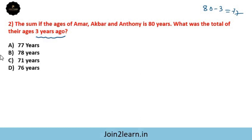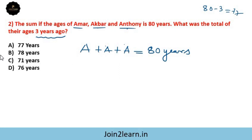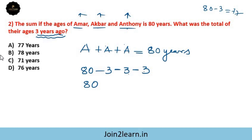Amar plus Akbar plus Anthony is equal to 80 years. Three years ago, each person's age would be 3 years less. So we subtract 3 from each: 80 minus 3 minus 3 minus 3, which is 80 minus 9, giving 71 years.